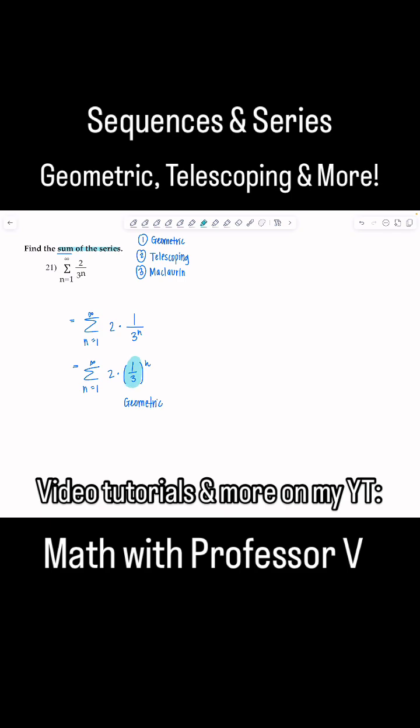This is r, the common ratio. And as long as absolute value of r is less than 1, it converges, and we can find its sum. And r is 1 third.